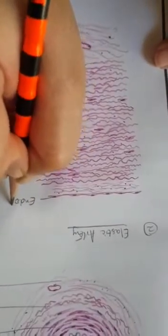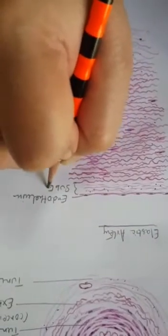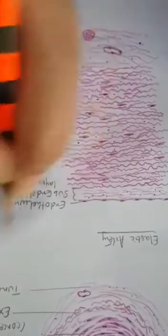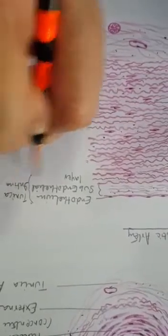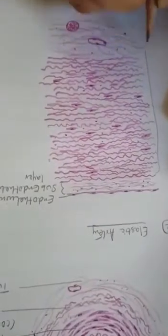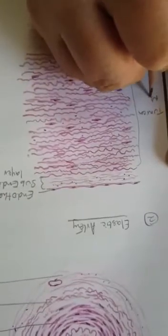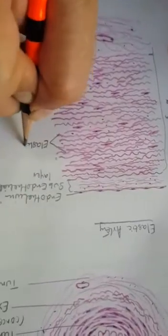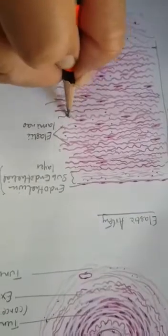Now we will label the diagram. This is endothelium. This is the subendothelial layer. This is tunica intima. This whole portion. This is the tunica media. These are the elastic laminae. These are smooth muscles.